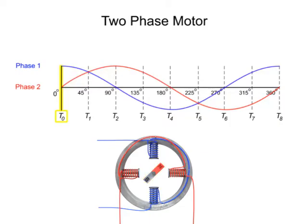At time 0, phase 1 produces maximum vertical magnetic flux, and the rotor aligns itself vertically with the stator poles. Because phase 2 provides no current flow to the stators, there is no horizontal pole on the rotor.